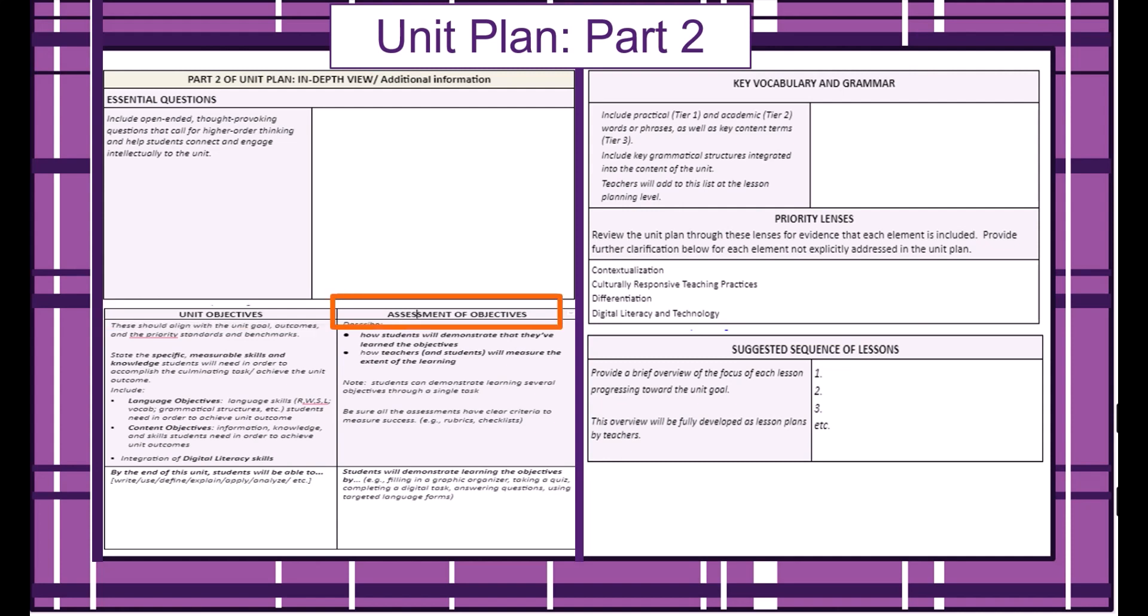The unit plan also describes how the objectives will be assessed. That is, how students will demonstrate that they've learned the objectives, through what activity or task, and how teachers and students will measure the extent of the learning, for example, through a rubric or a checklist. An ESOL unit plan also includes a list of key vocabulary and grammar targeted in the unit. Teachers will add to this list when writing their more detailed lesson plans.